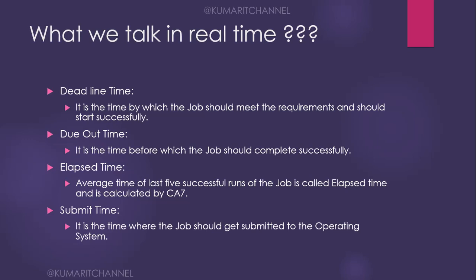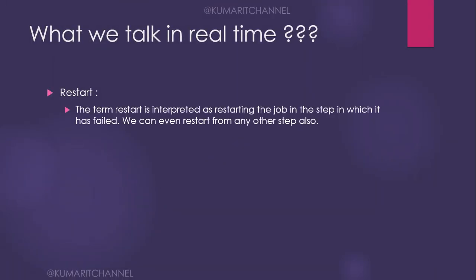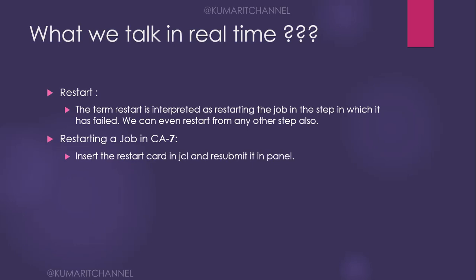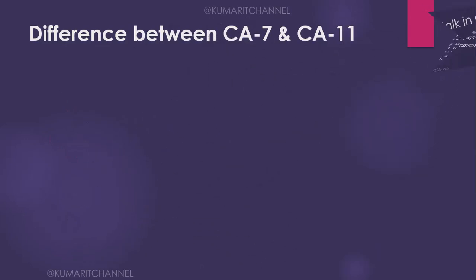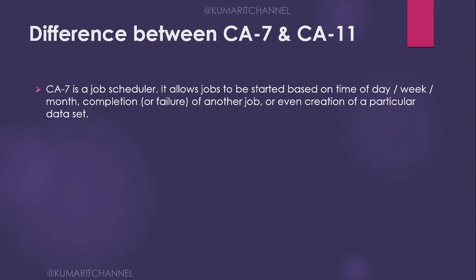Now let's look at restart. If a job fails and you want to restart from a particular step, we use the term 'restart.' Restarting a job in CA7 means inserting the reset card in the JCL and submitting it in the panel. CA7 operators will restart the job from the panel. In C11, the step where the job failed is already tracked and we restart from there via the executive panel, but we can also change the step name from where it should start.